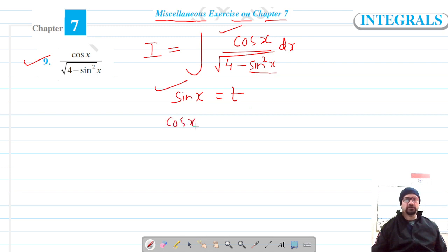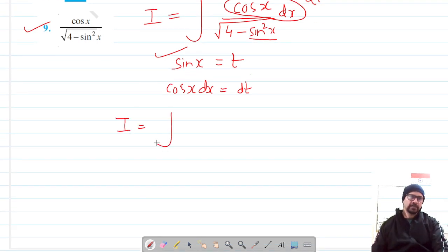So this gets substituted as dt and now our integral I, I can write as the integration of dt over the square root of 4 minus t squared.